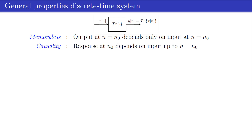A system property that is important for real time applications is causality, which implies that for any index n0, the response of the system at time index n=n0 depends only on the input up to index n=n0. Thus, for a causal system, changes in the output cannot precede changes in the input.